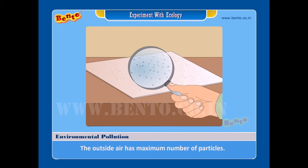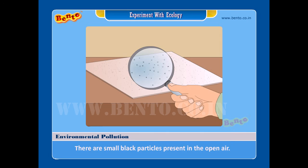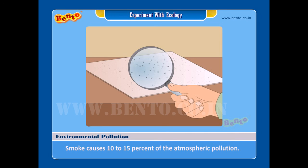Result: The paper placed in open air becomes pale in color. There are small black particles present in the open air. Smoke causes 10 to 15 percent of the atmospheric pollution.